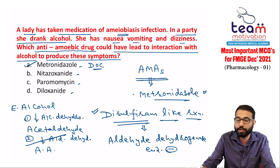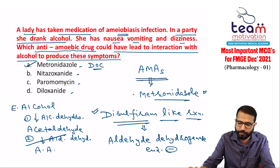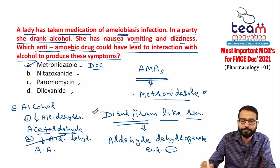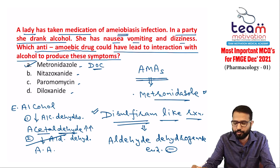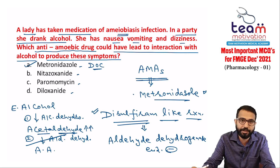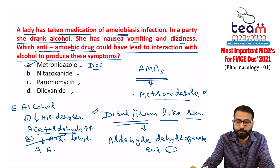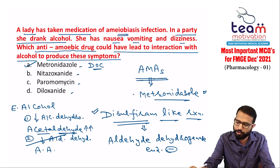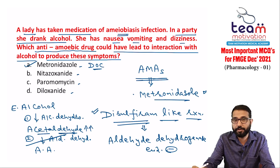If aldehyde dehydrogenase is inhibited by any drug including disulfiram, acetaldehyde levels increase. Elevated acetaldehyde causes nausea, vomiting, dizziness, and flushing reactions because it releases histamine. That is why the patient experiences these bad reactions, and why disulfiram is used as antabuse. Any drug causing a similar reaction is called a disulfiram-like reaction.